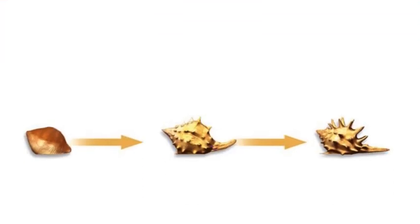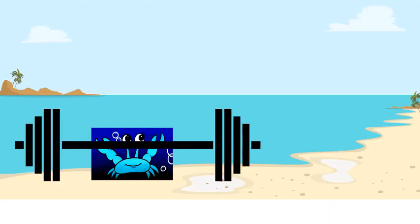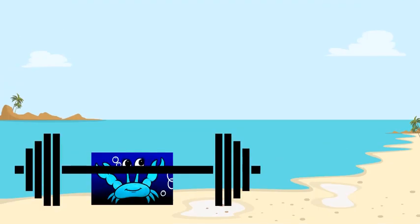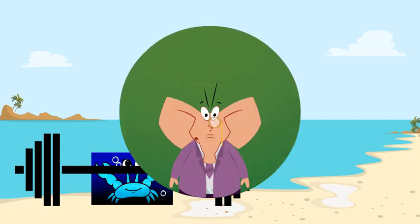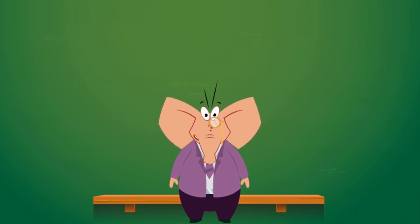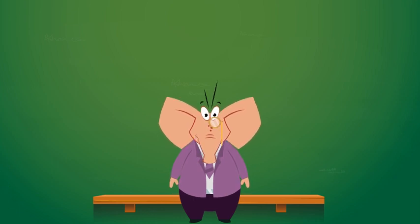The snails realized they must fight back and become even thicker and have more spines. After the crabs realized this, they put in even more hours at the gym so that their claws have a chance against the strong shells. And the story goes on — there is no clear winner, and both species will continue to evolve.